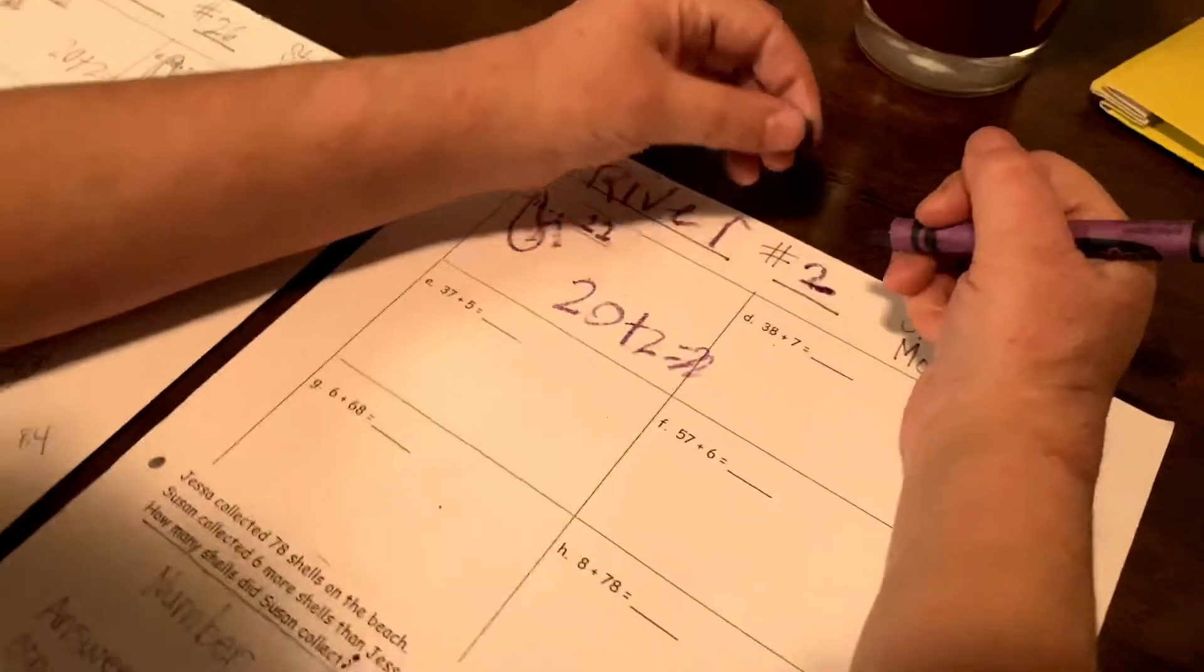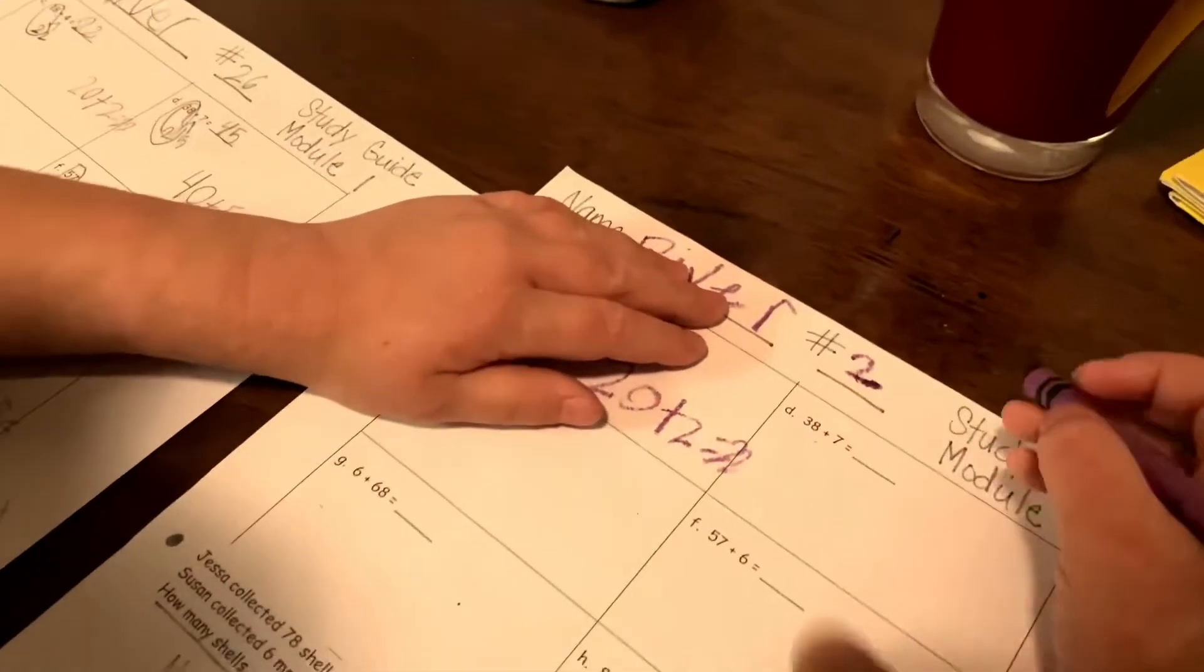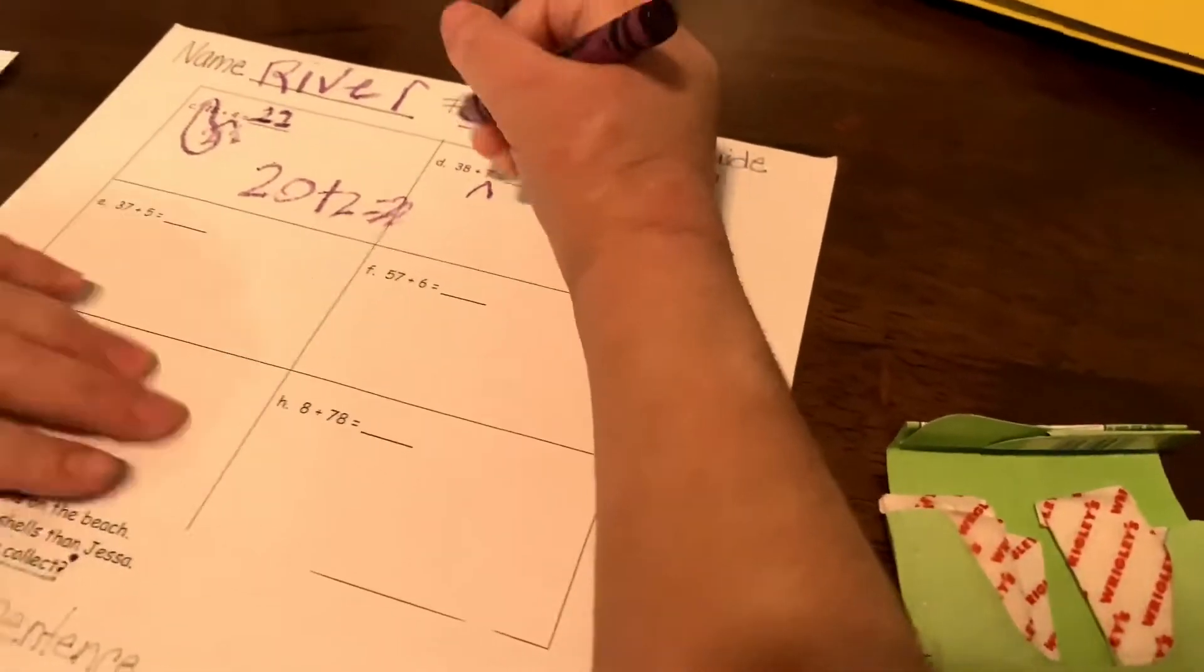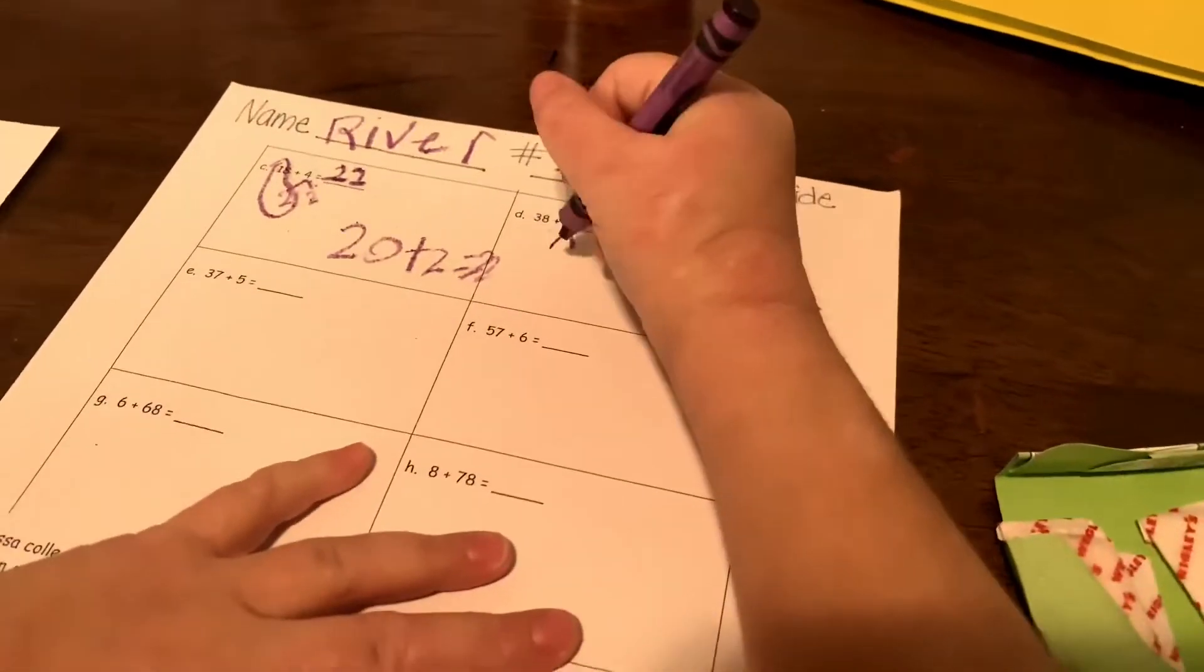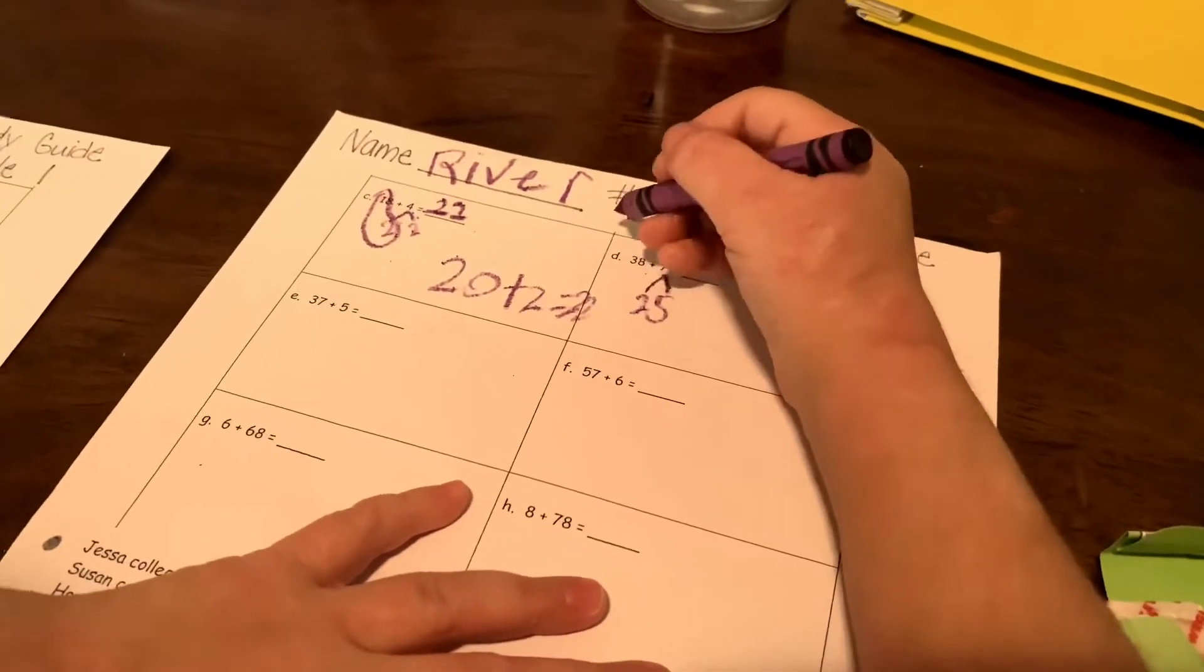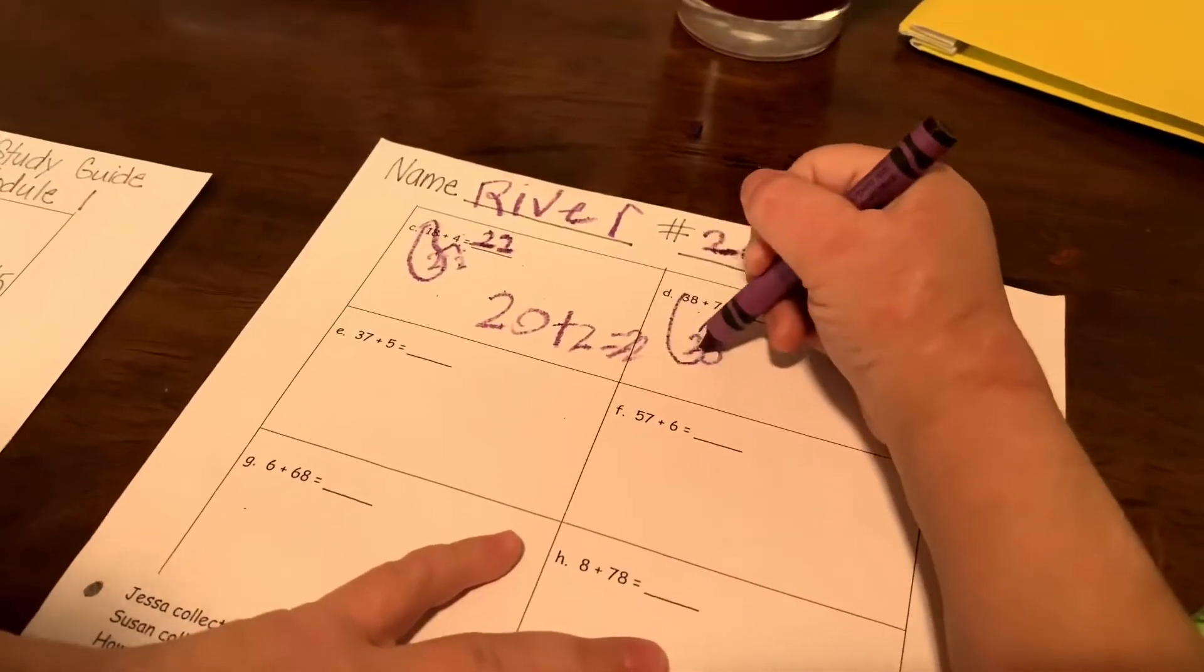Hey, real quick, why don't we do this, River? Do this one for us and tell us everything you're doing. Tell us how you're gonna get this answer. So you break apart the seven into two and five. Okay. And then you circle the 38 to the 20... I mean the two, yeah.